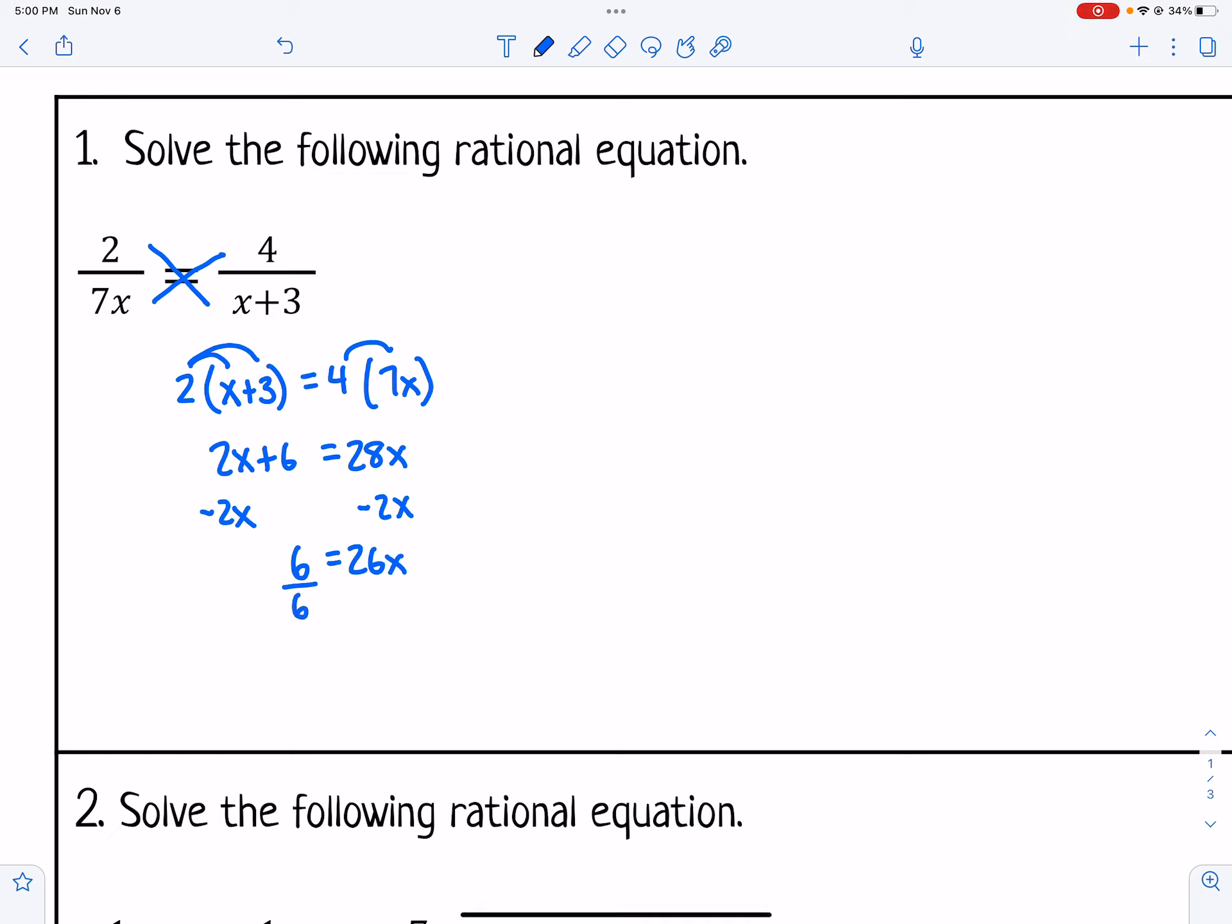And then I'm going to divide by 26 to get x by itself. And then I can just reduce that by dividing each one of those by 2. So I would get 3 over 13 for my x.